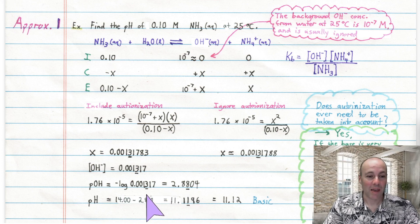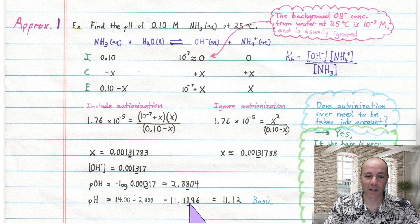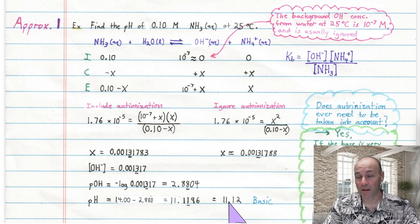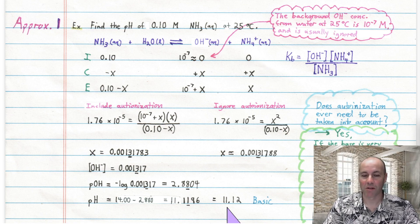Now that we have the hydroxide concentration, pOH = −log(0.0013) = 2.88. Therefore pH = 14 − 2.88 = 11.12. That's somewhat basic — not up near 14 like a strong base would give, but greater than 7, so it's in the basic region: the weak base region.